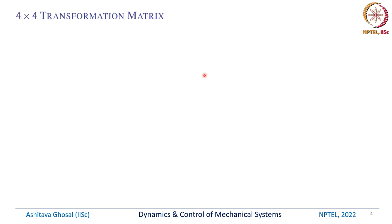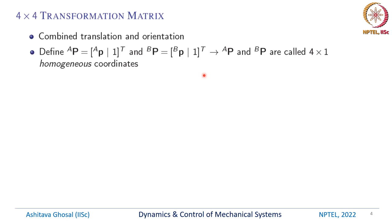We want to represent the combined rotation and translation of a rigid body in 3D space. To do that, we define a new quantity A capital P, which is A small p — the position vector of a point in the A coordinate system — with a 1 appended, making it a 4 by 1 vector. Likewise, B capital P is the vector in the B coordinate system with a 1 added. These are called homogeneous coordinates.